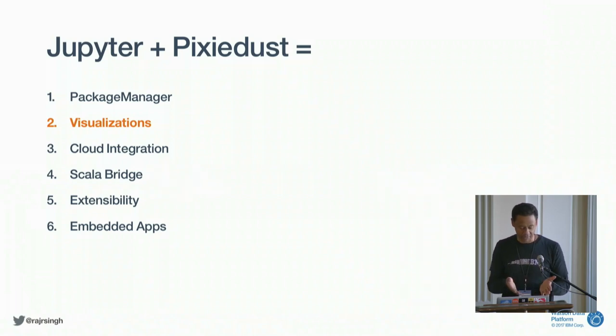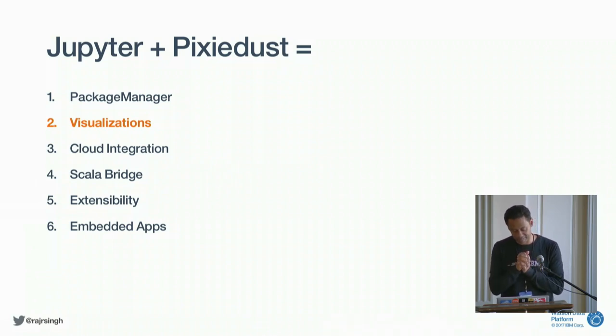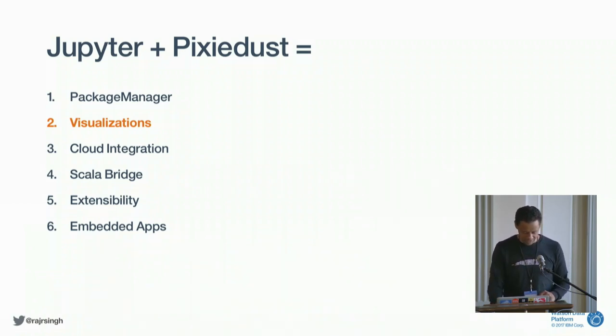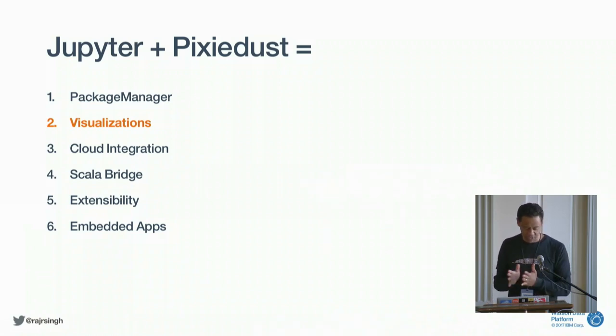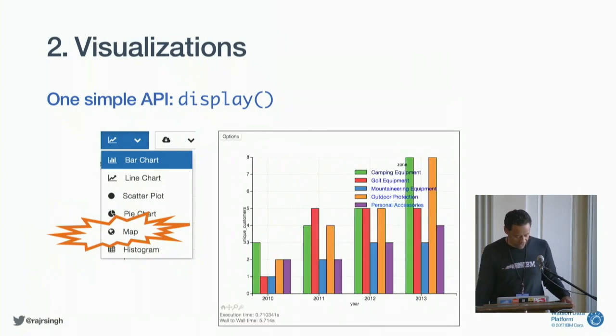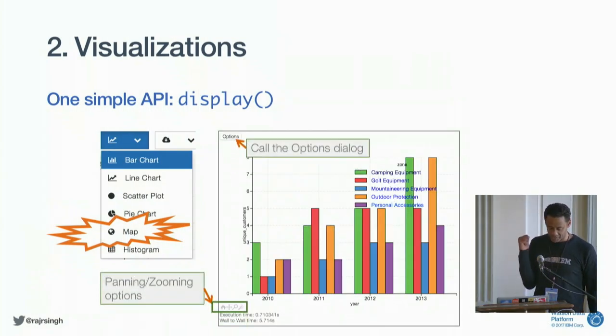I'm talking about visualizations, particularly map visualization, but there are a lot of other pieces to Pixie Dust that make your Jupyter notebook work more pleasant. Package management — you can install Spark packages or JARs without modifying a config file, which is really nice. One simple API for display, which I'm going to talk more about.